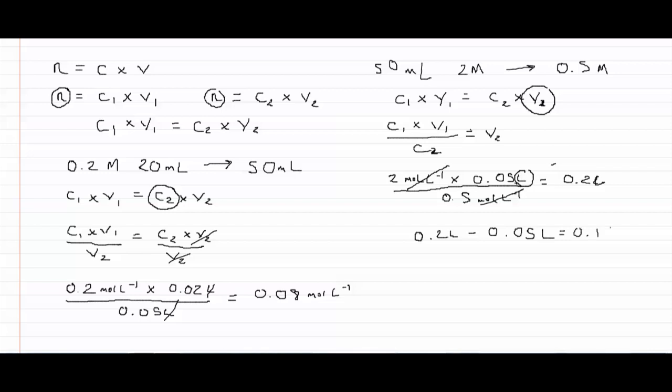Which equals 0.15 liters. In other words 150 mils. So to dilute our solution from 2 molar to 0.5 molar we add 150 mils of water.